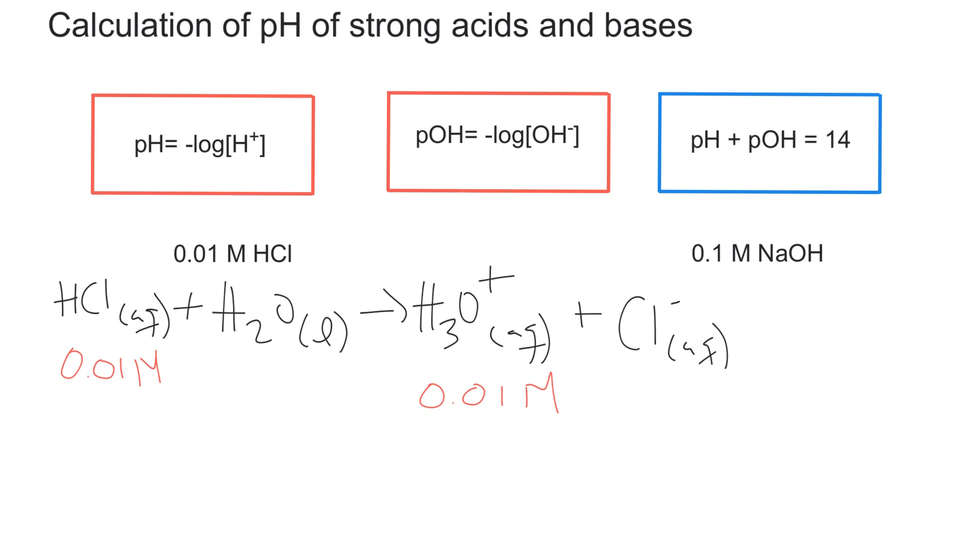Hydronium or H3O+, is the same as the amount of hydrogen ions. Because it's simply water and a proton. So you could write it either way. So now let's plug it into our equation.